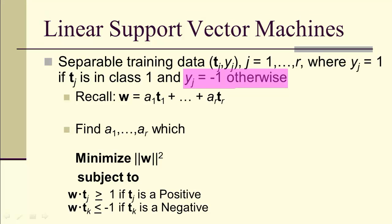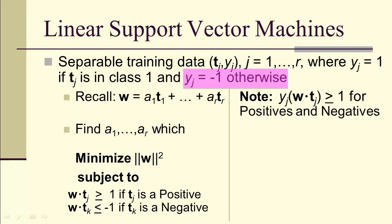Notice that I've changed to y_j equals negative 1 instead of y_j equals 0, because it's going to allow us to rewrite our conditions as simply y_j times the quantity w dot t_j greater or equal to 1 for both the positives and the negatives. Both those inequalities are implied by this single inequality.